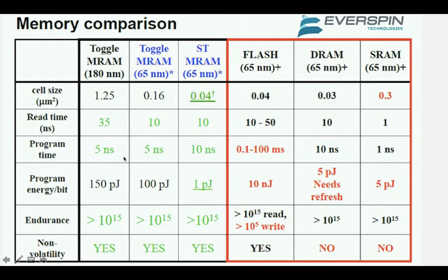Here is the memory comparison from Everspin Technologies of different kinds of RAM from the last two decades. We have already been using DRAM and SRAM in our mobile phones and laptops. Recently, MRAM, which stands for Magnetic Random Access Memory, is very promising because of its non-volatility. From this table, as you can see, STT-MRAM is non-volatile while existing DRAM and SRAM are volatile, so even if your computer crashes due to power loss, MRAM will not lose the data while DRAM and SRAM will.